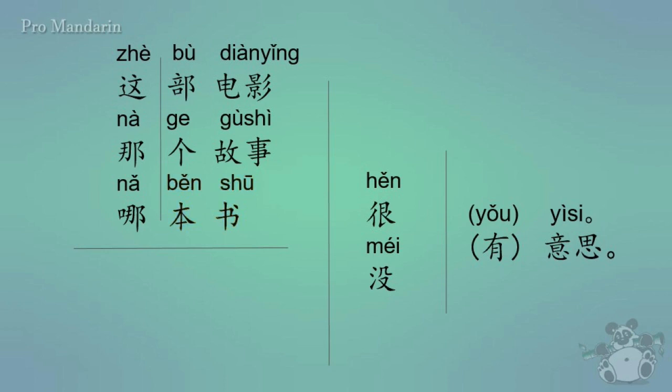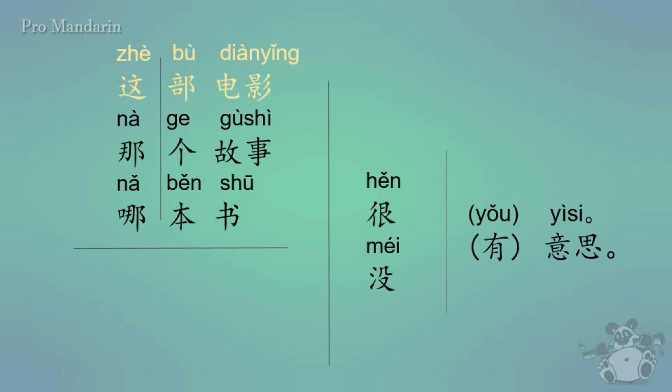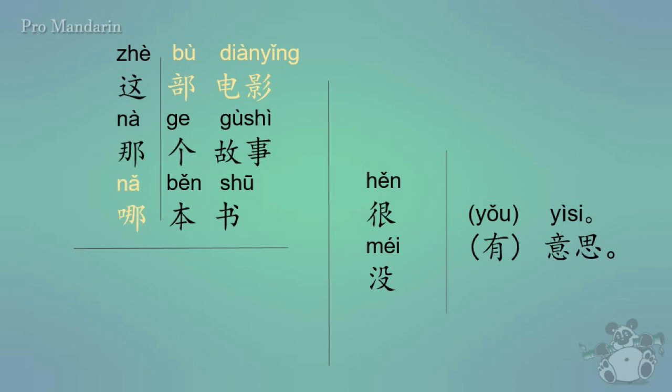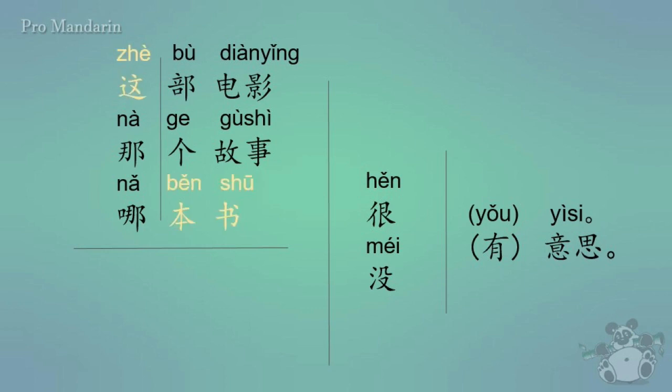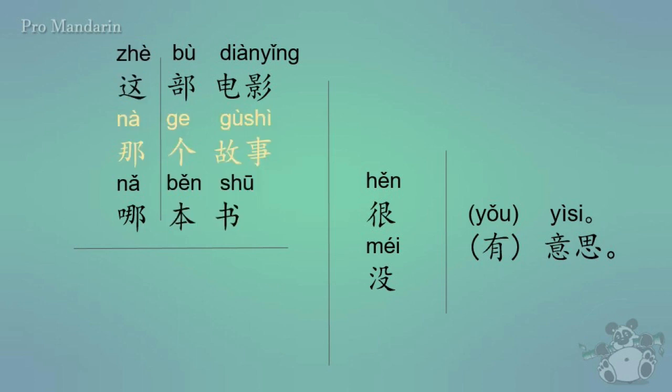The way these work: if I were to say 'this movie', I would say 这部电影. 'That movie' would be 那部电影. 'Which movie' — as in which movie are you talking about — would be 哪部电影. This goes the same way with gùshi and shū. So for example, 'this book' is 这本书; 'that story' is 那个故事; 'which story' is 哪个故事, and so on.